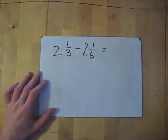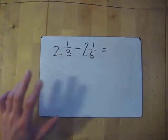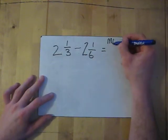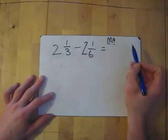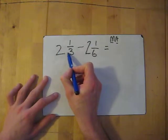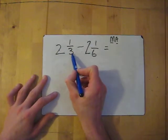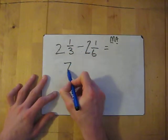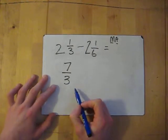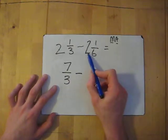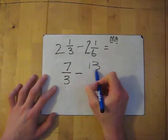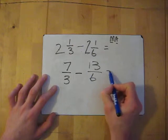So let's have a go at a couple. We've got two and a third take away two and a sixth. First thing we need to convert each mixed number into an improper fraction. Remember, multiply and add: two times three gives me six, then add the one which gives me seven, and the denominator always stays the same — so seven over three. Take away: two times six is twelve, add the one which is thirteen, so it's thirteen over six.